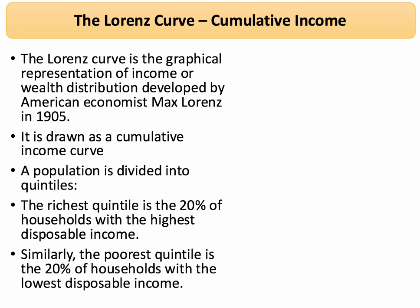We could use deciles (10%) or percentiles (1%), but typically in exams the data given is quintiles, meaning we divide the population into five groups. The fifth quintile is the richest, and the first quintile is the poorest 20% of households, measured by disposable income.